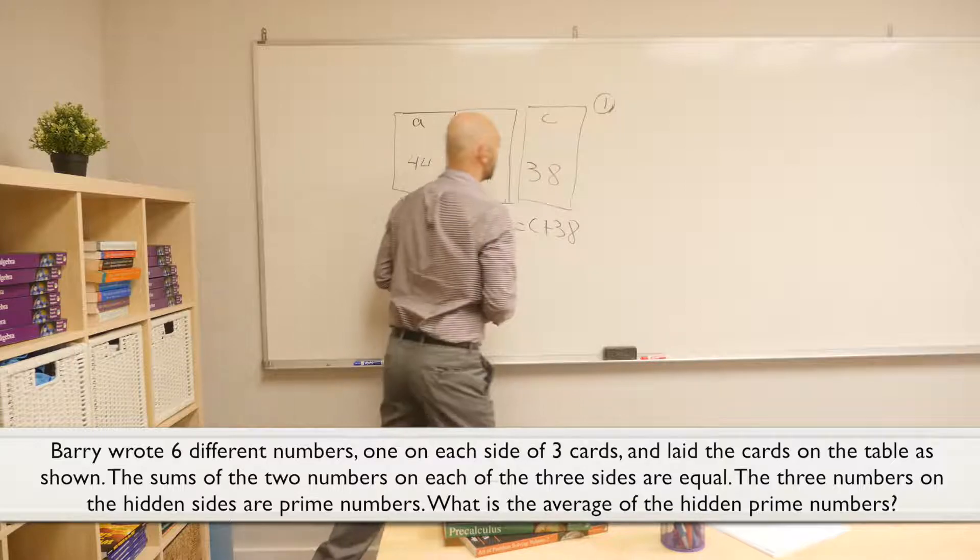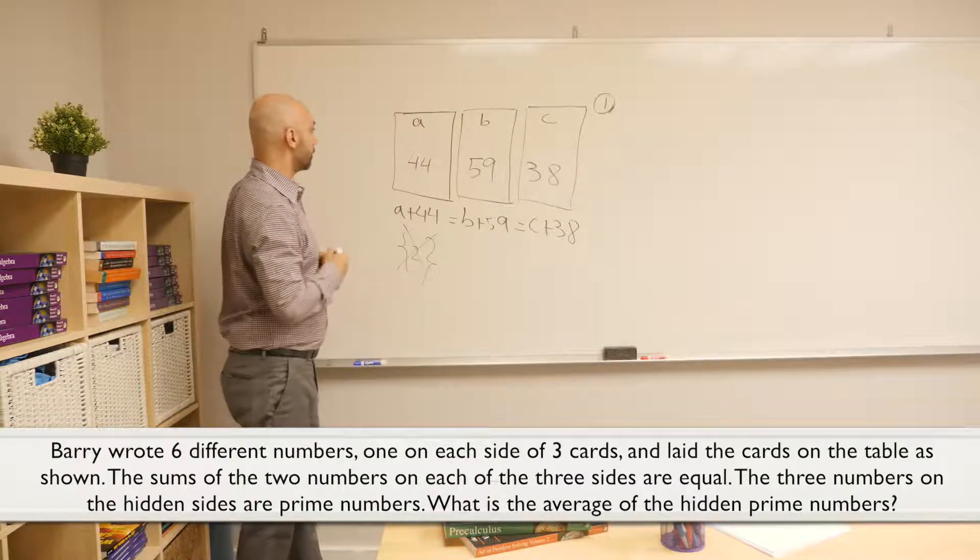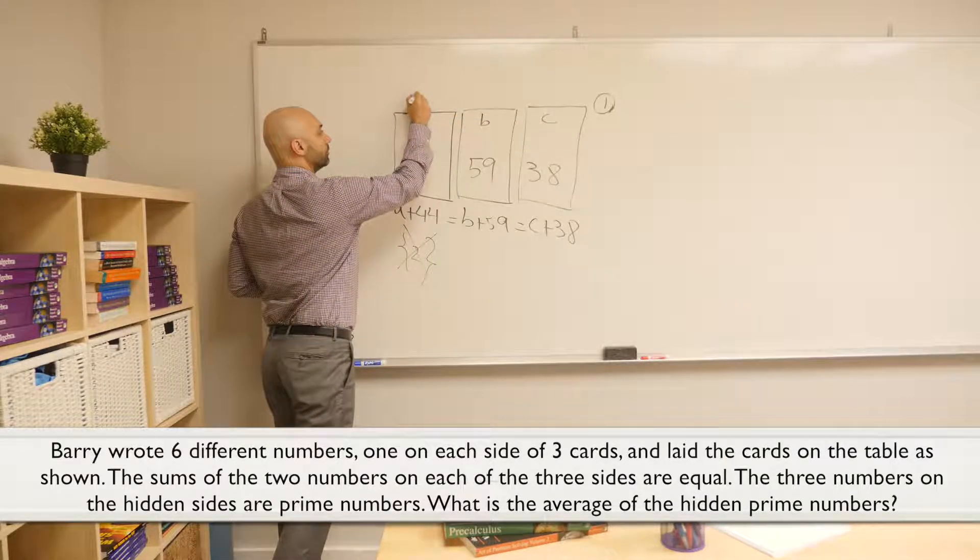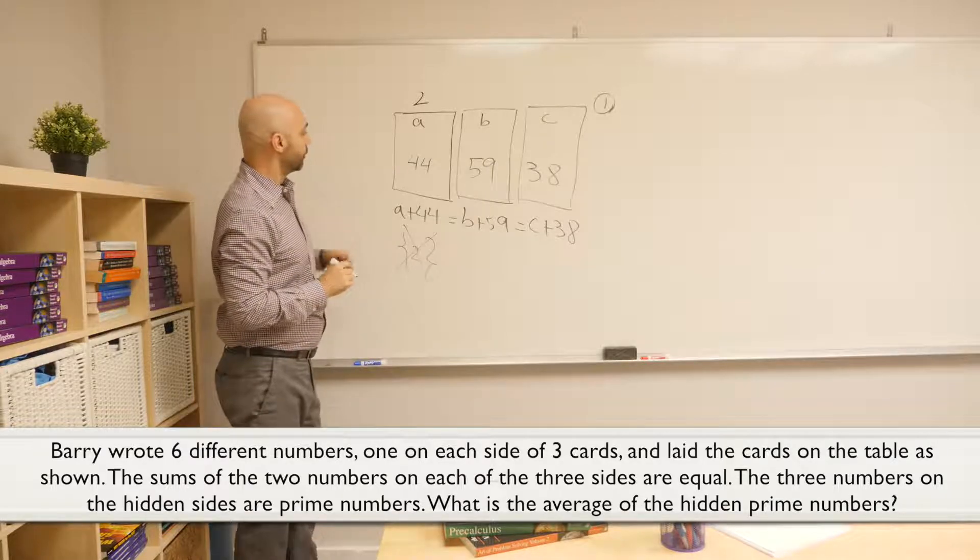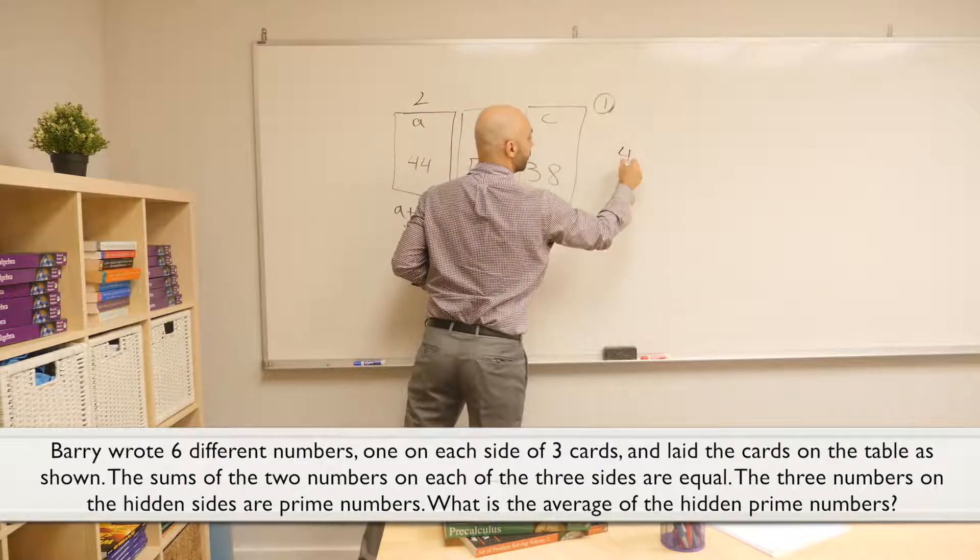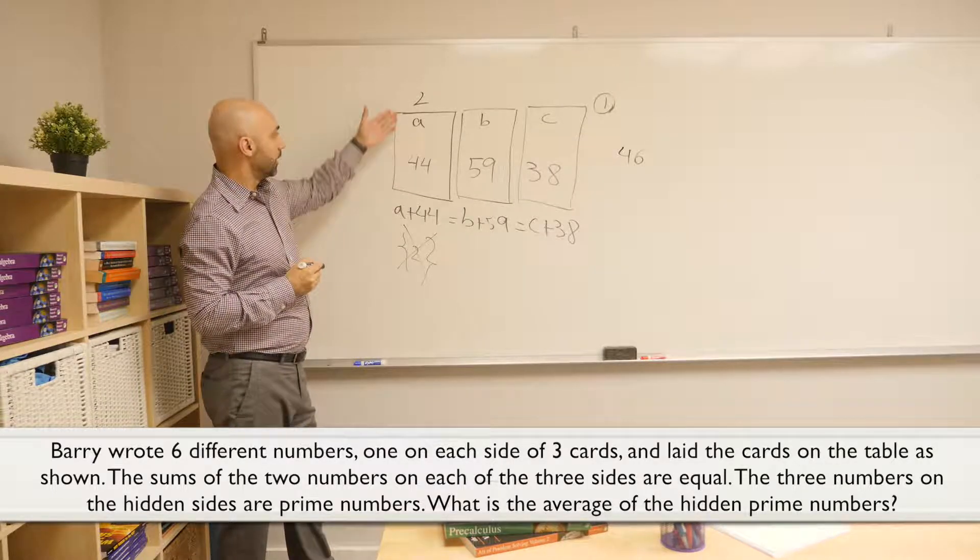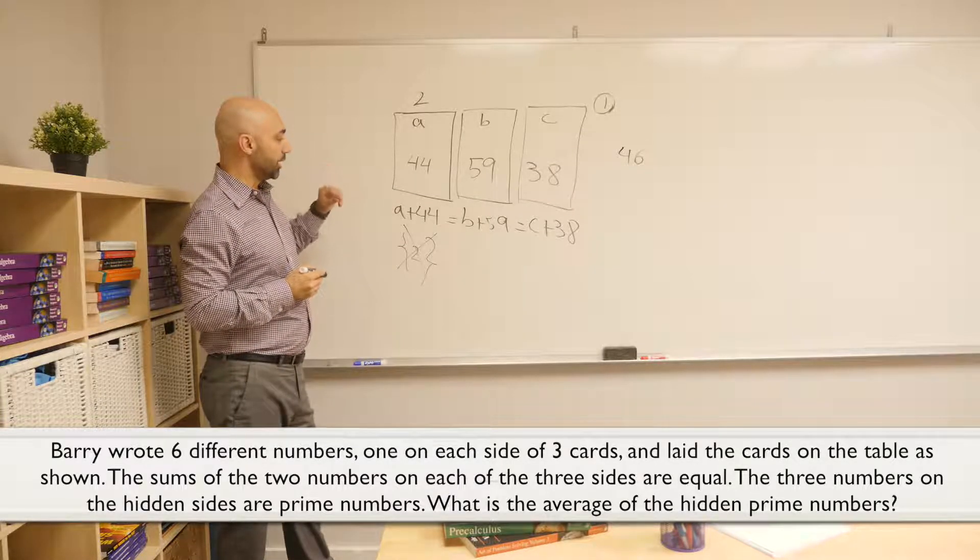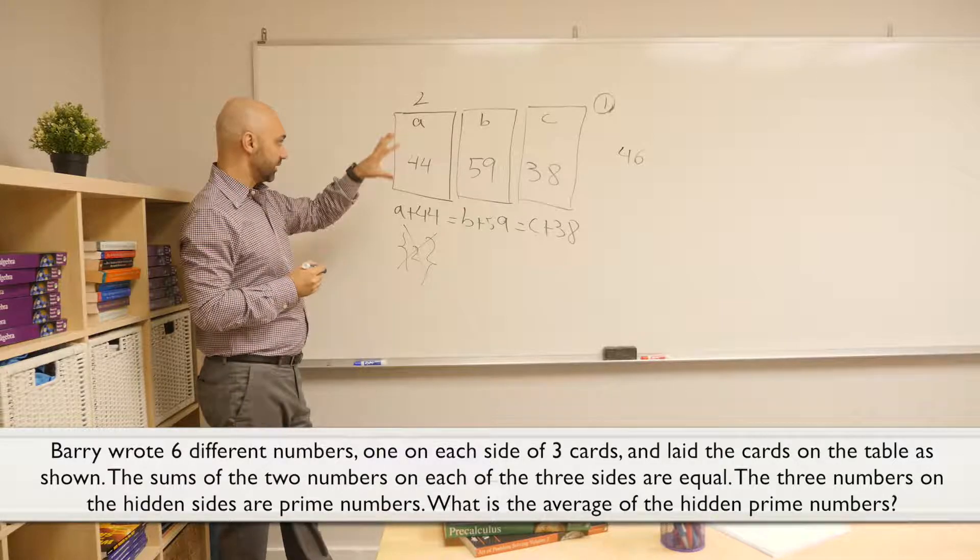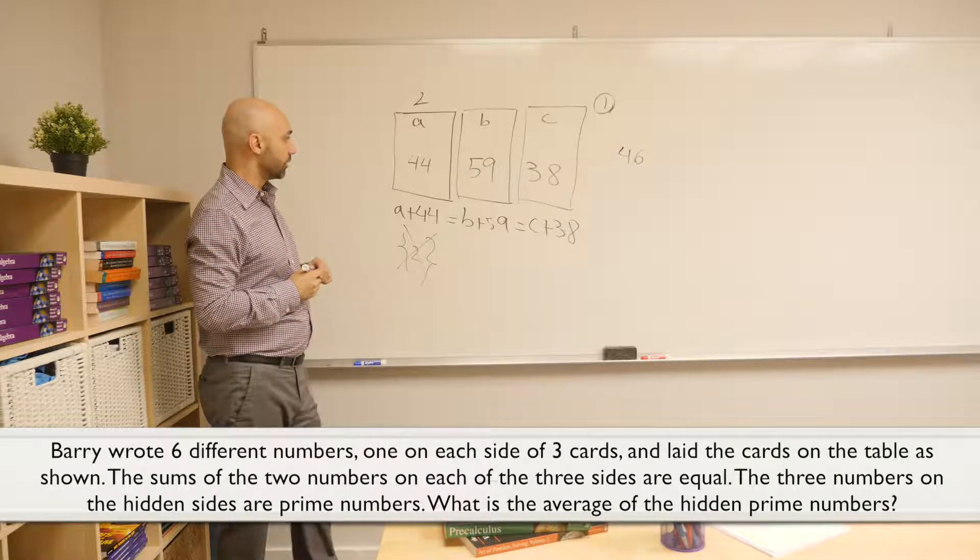But where are we going to put that two? Let's try with the first card. If I put the two here, well, two plus 44, we get 46, also an even number. Now, if we use the two already and knowing that we cannot use a number twice in the front and back of the card, so we're only left with odd prime numbers.